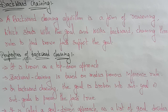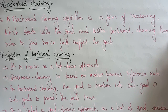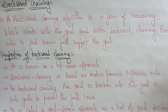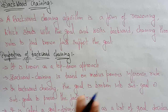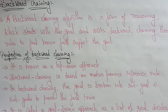Hi students, welcome back. Now coming to the backward chaining in artificial intelligence — in the previous video I explained about the forward chaining, and now let's see the backward chaining. It's exactly the same as forward chaining but in reverse direction. In forward chaining you take the initial state and reach the goal state, but here in backward chaining, with the help of the goal state you are going to reach the initial state. That is the main difference between forward and backward.